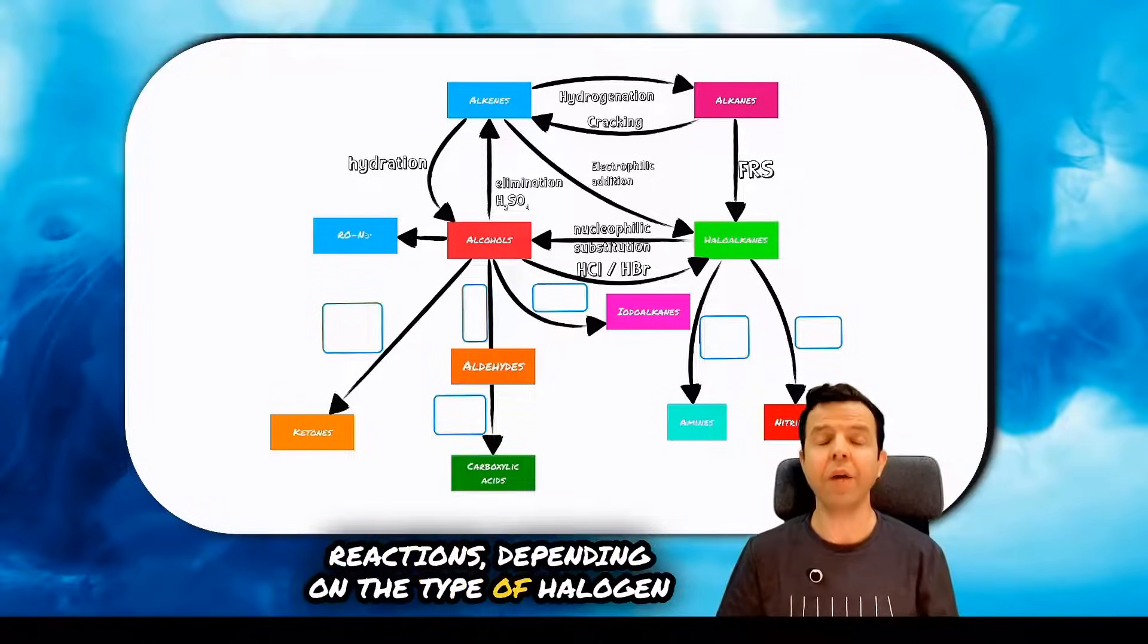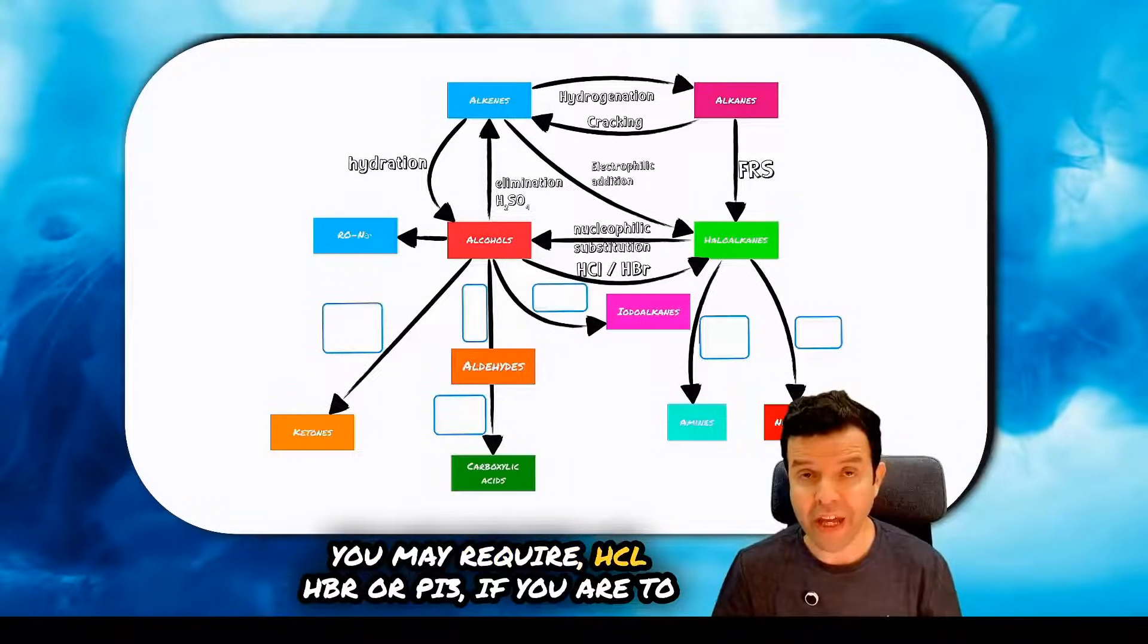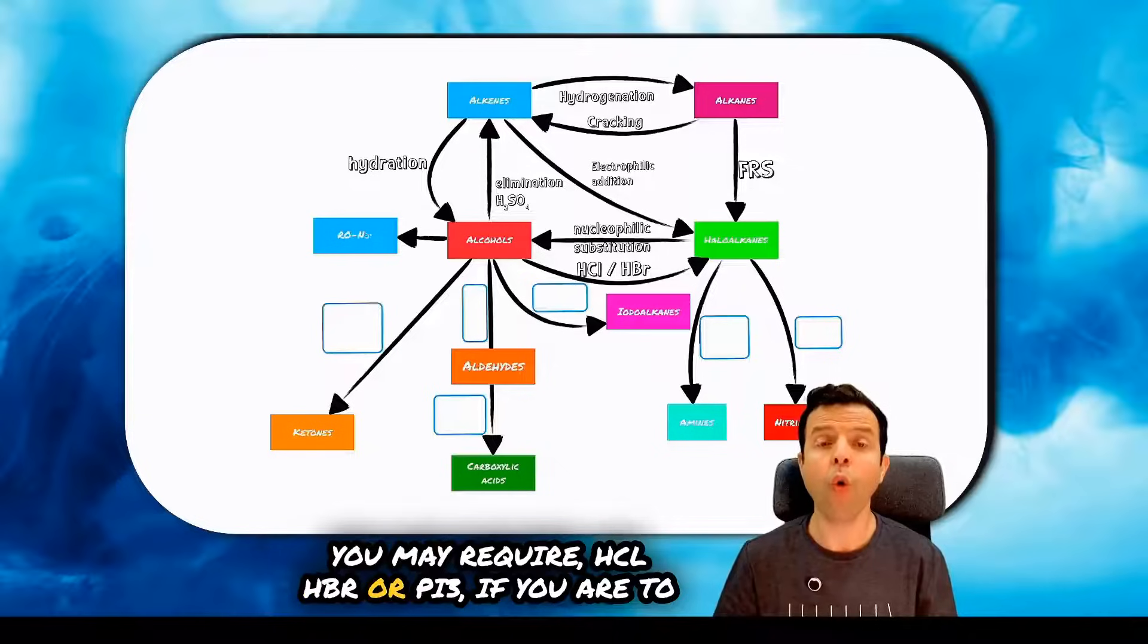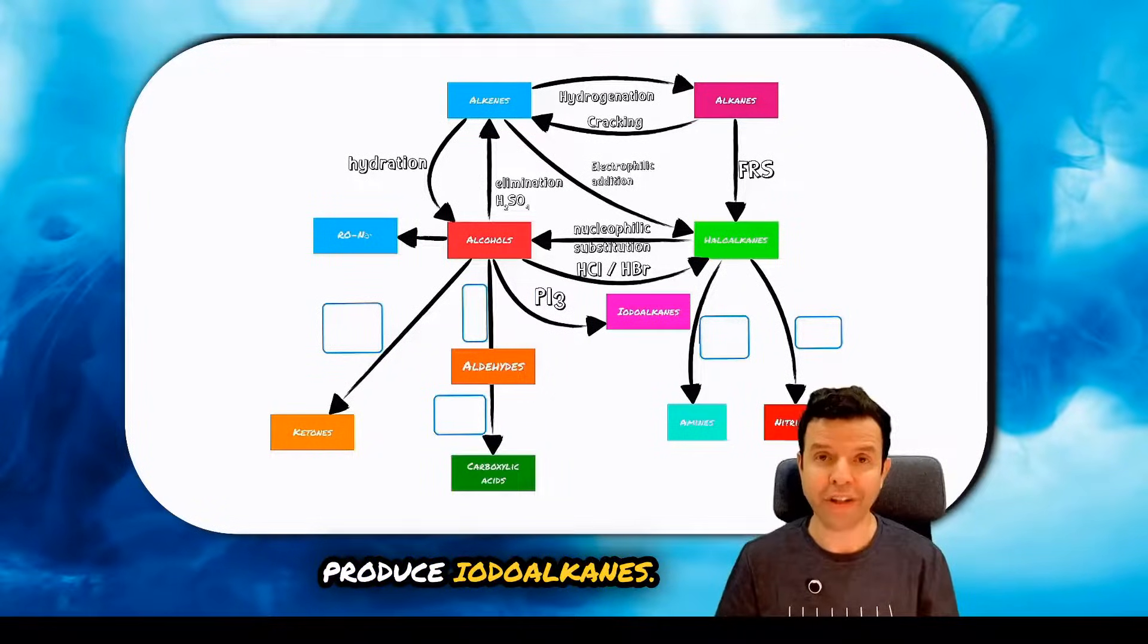Depending on the type of halogen, you may require HCl, HBr, or PI3 if you are to produce iodoalkanes.